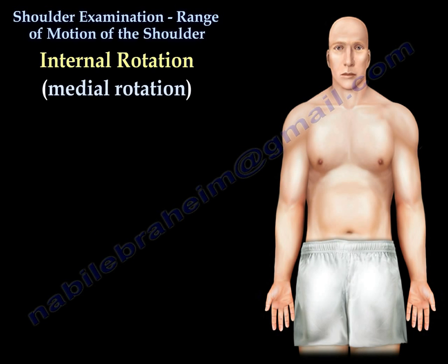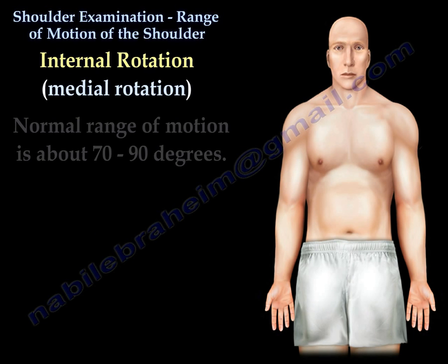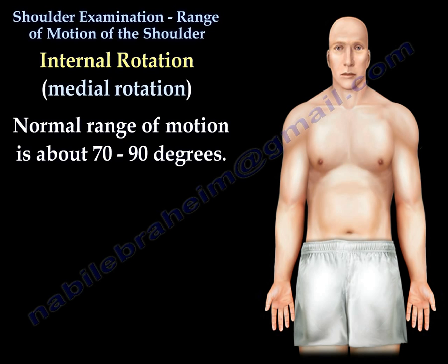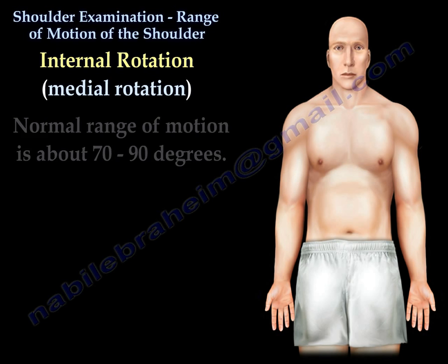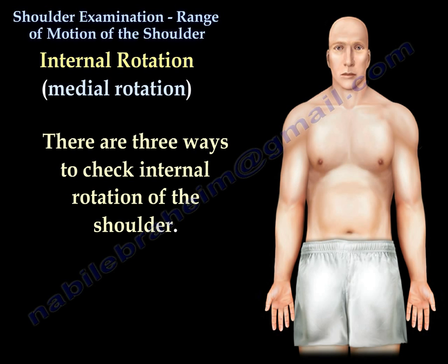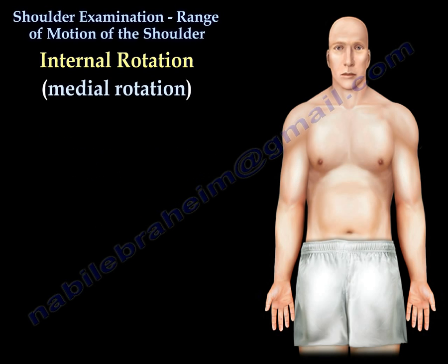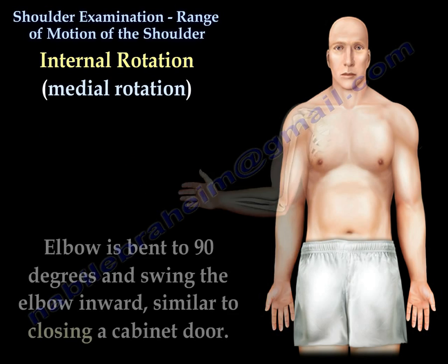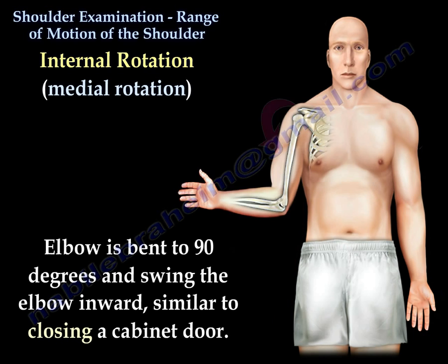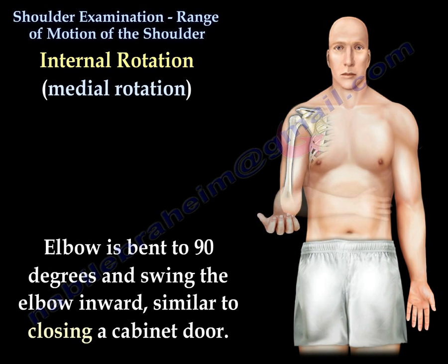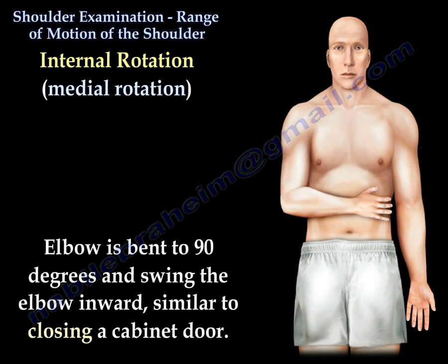Internal rotation, or medial rotation, has a normal range of motion of about 70 to 90 degrees. There are three ways to check internal rotation of the shoulder. The first way is done by bending the elbow to 90 degrees, then swinging the elbow inward, similar to closing a cabinet door.